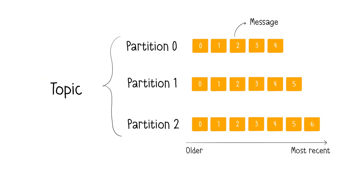Kafka organizes messages into categories called topics. Topics are specific streams of data resulting from events and are similar to tables in databases. For example, you might have a commercial transactions topic and another for customer references. These topics consist of partitions. Each partition is ordered, and each message within a partition receives an incremental identifier. Apache Kafka maintains the order of communicated data and the order of message production. Producers publish messages to topics, and consumers subscribe to these topics to receive messages, enabling asynchronous communication.